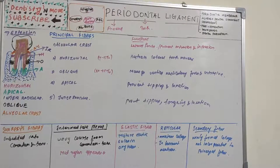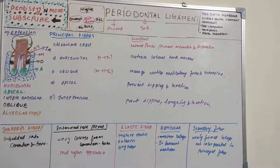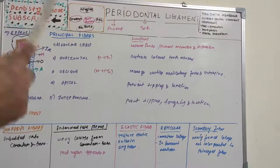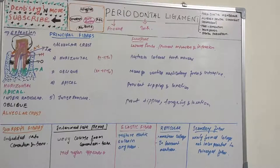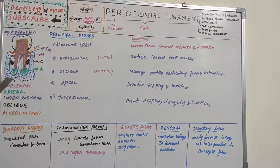The intermediate plexus was originally believed to be a zone where principal fibers, following a wavy course from cementum to bone, joined in the mid-region of the periodontal space giving a zone of distinct appearance. The current concept is that fibers cross the entire width of the periodontal space, where branches join neighboring fibers to form a complex three-dimensional network, which accounts for that peculiar mid-region appearance.